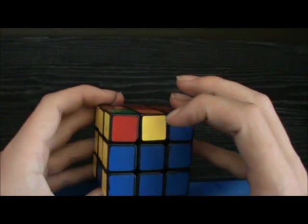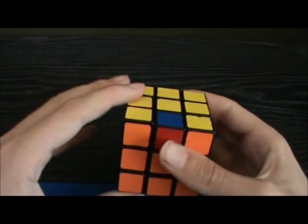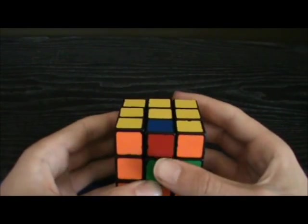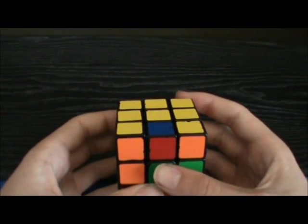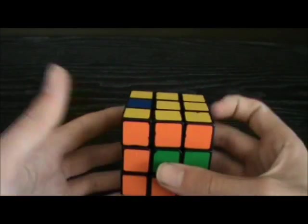So here is UF to RB. I am going to set this up by doing L' E L. That just turned it into an R perm. And undo.